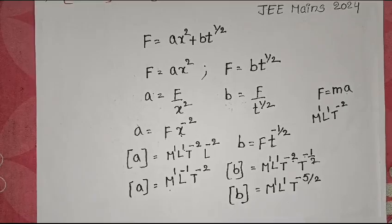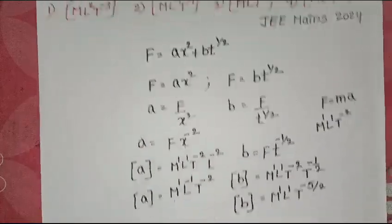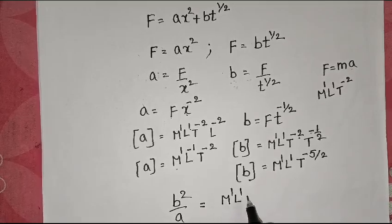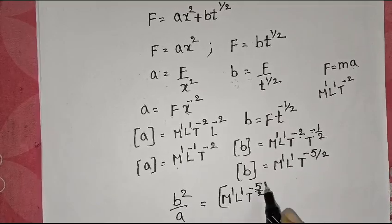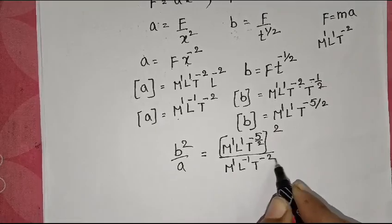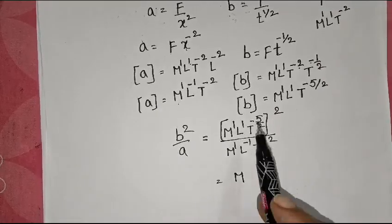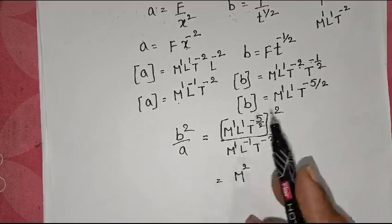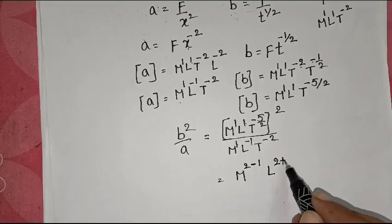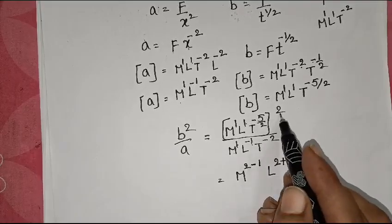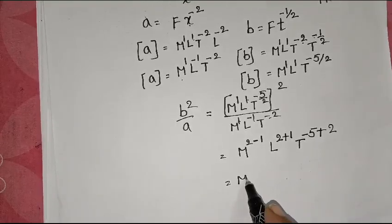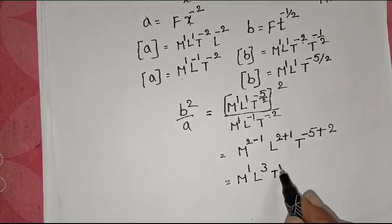Now, dimensions of B²/A. B² divided by A equals [M¹L¹T^(−5/2)]² divided by M¹L⁻¹T⁻². Squaring B gives M²L²T⁻⁵. Dividing by A: M² ÷ M¹ = M¹, L² ÷ L⁻¹ = L³, and for T: −5 − (−2) = −3. So B²/A = M¹L³T⁻³.